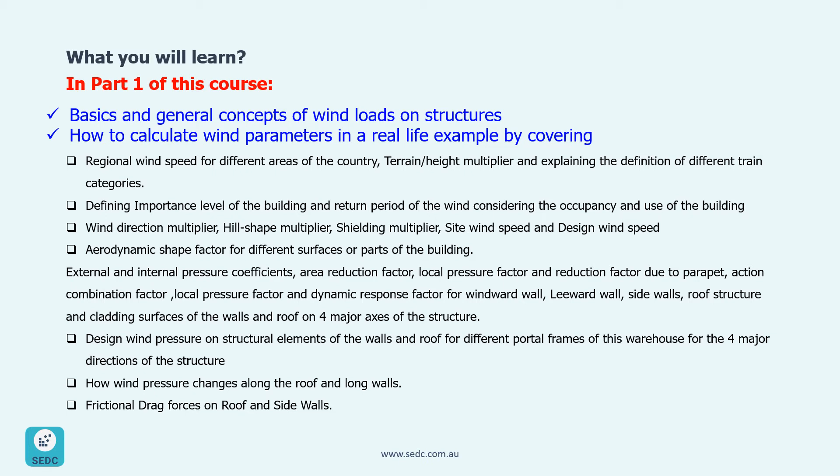These factors have to be determined for windward walls, leeward walls, side walls, roof structure and cladding surfaces of the wall and roof with respect to the wind on four major axes of the structure. Then we will calculate design wind pressures on structural elements of the walls and roof for different portal frames of this warehouse. We will also check frictional drag forces on roof and side walls and explain how wind pressure changes along the roof or the long walls.